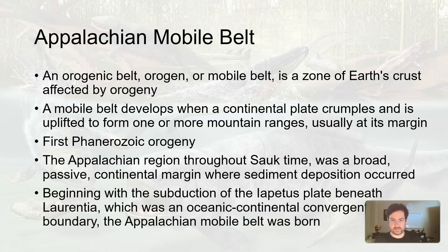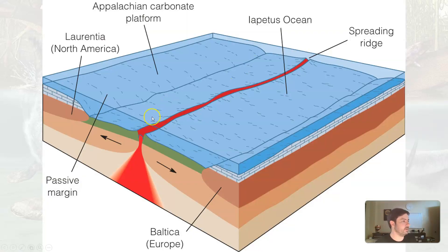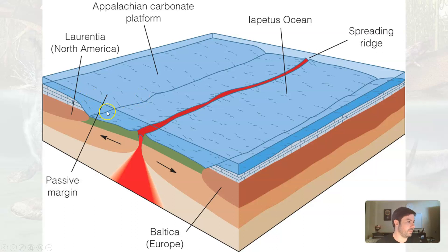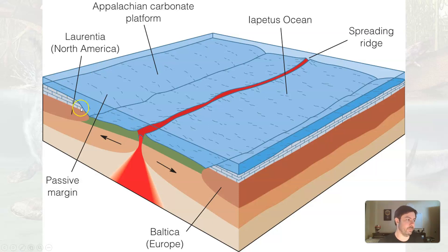Once there was a change in boundary types just off of what is now the east coast of the United States, the Appalachian mobile belt was born. So here's Laurentia — North America. We get a lot of sediment being deposited in the continental shelf area: sandstone, shales, limestones — that's what carbonate rocks are. This was a passive margin because it was not near a plate boundary. There was a divergent boundary that was actually pushing Laurentia away from Baltica, which is now part of Europe, so the edge of the continent was away from the boundary — it's a passive margin.